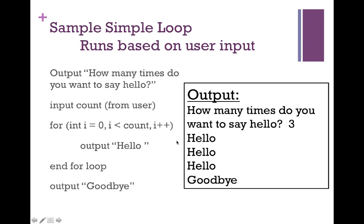If the user enters three into count: the first time through, i is zero and hello prints. i increases to one — one is less than three, so the for loop executes again and hello outputs a second time. i increases to two — two is less than three, so hello outputs again. i increases to three — three is not less than three, so we exit the for loop and continue on to print goodbye.